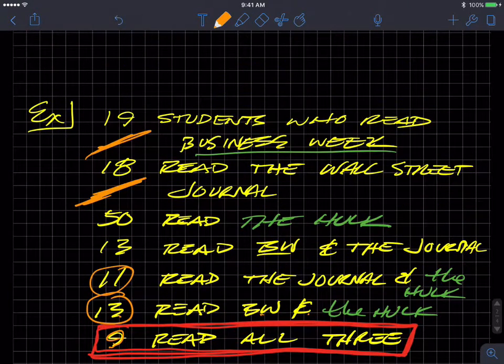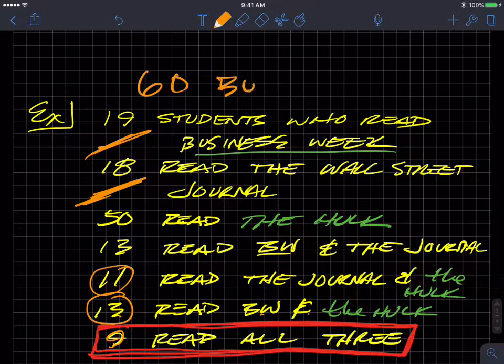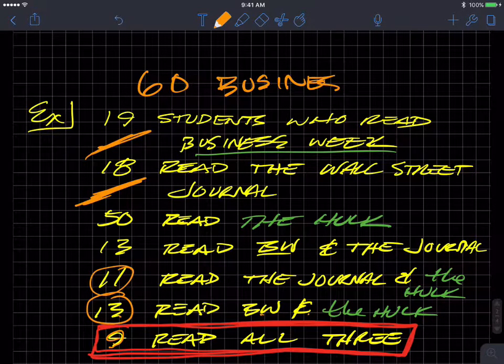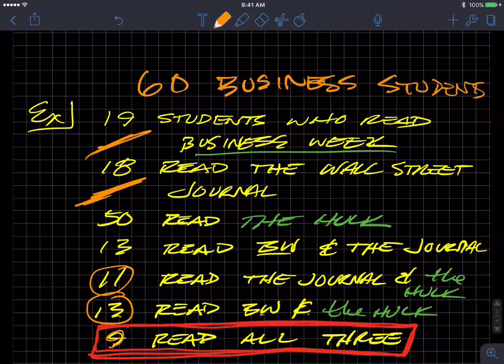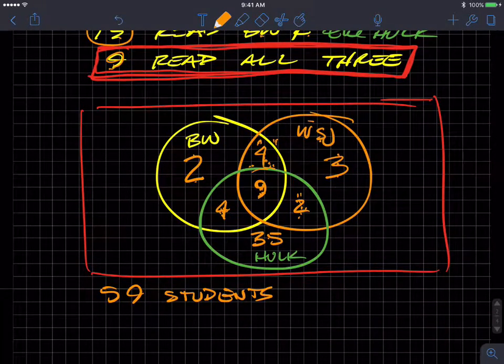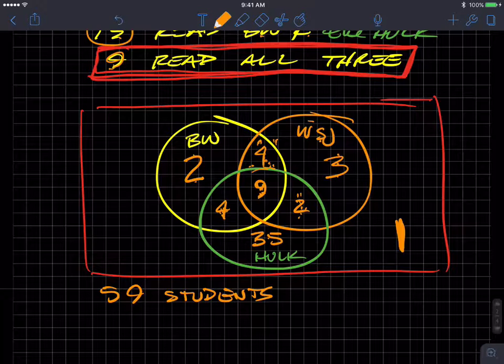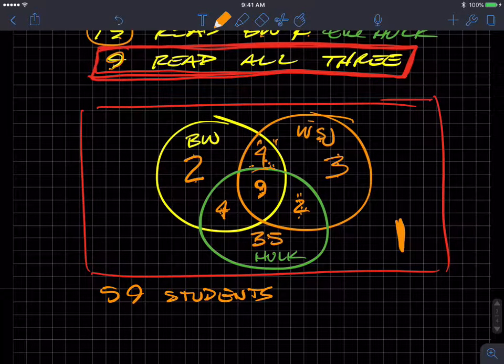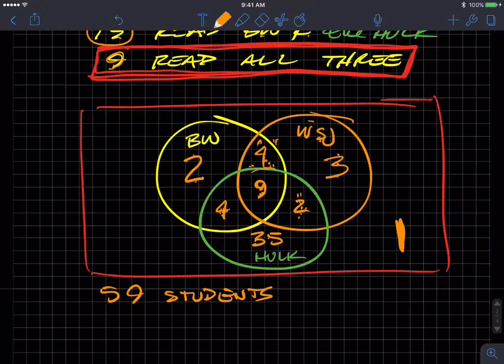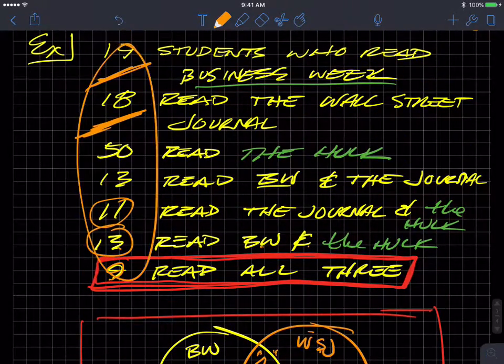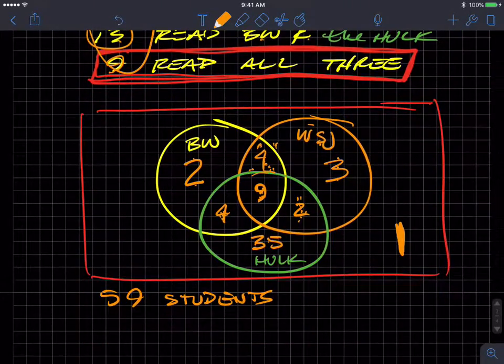And I didn't tell you in the beginning of this, the early part of this problem told you that there were 60 business students. So that means there's one of those 60, one, out in the universe that does not read any of these three magazines. Maybe they read something else. Maybe they read Daredevil. I don't know. Or Deadpool. Who knows? But they don't read any of these three. So that's how you would use this type of information to construct a Venn diagram.